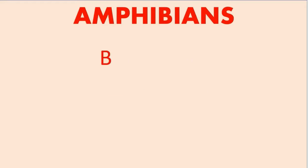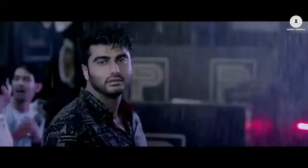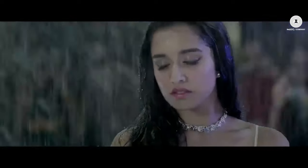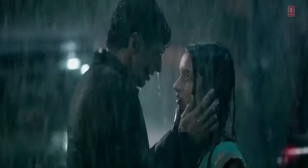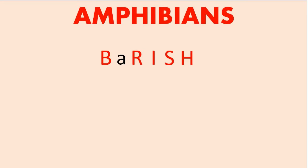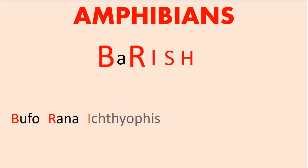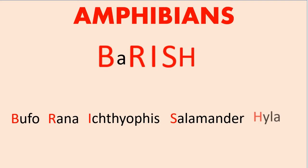Now let's move to Amphibians. This mnemonic is the easiest to remember because it's just a single word: 'Baarish.' B is for Bufo. A is for Amphibia. R is for Rana. I is for Ichthyophis. S is for Salamander. And H is for Hyla. Easy, right? All the examples in a single word — Baarish.